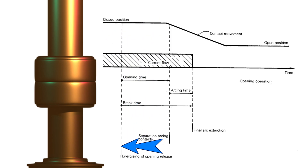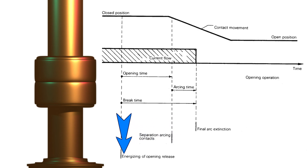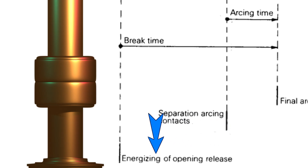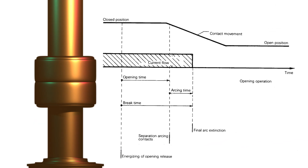Now suppose at that point, the opening release is actuated — the opening release is energized. As soon as the opening release is energized, the breaker will not open immediately because there will be a slight movement of the hinges, levers, gears, and associated latches before the actual opening of the circuit breaker, before the actual movement starts by the moving contact.